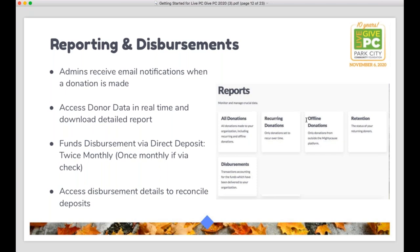There's also a recurring donations report available. If you have donors that set up recurring donations, or if that's a strategy you choose to focus on during the Live PC, Give PC campaign — in a time like this when stability has become a really important rallying cry for nonprofits — the idea of asking for smaller amounts in a recurring gift might appeal to either your nonprofit or your donors. You can access this report and it will give you all the information you need: when their next donation is set to process, when their card is going to expire, and tools to communicate with those recurring donors through the platform.